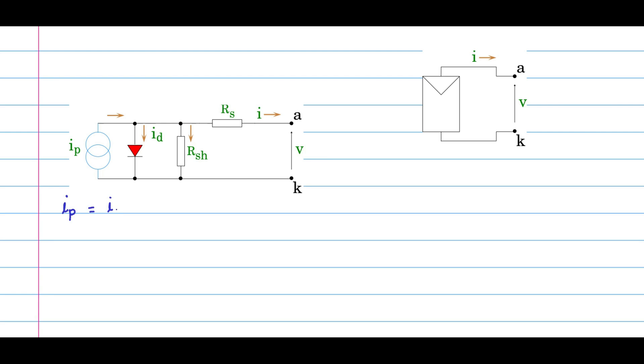Looking at the equivalent circuit, the current I_P is equal to I_D, the diode current, plus the current through the resistance R_shunt, plus the terminal current I. If you consider this as the reference node, the voltage at this node can be seen that it is equivalent to V plus this drop. Therefore, you have at this point V plus I*R_s. Therefore, current flowing through R_shunt is (V + I*R_s) divided by R_shunt.